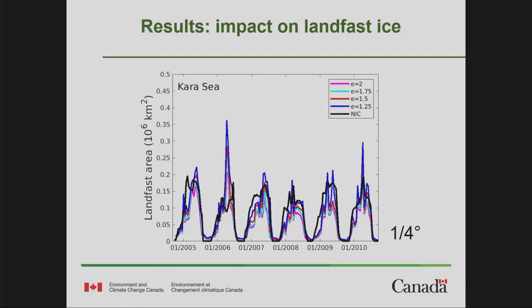Looking at land fast ice — this is consistent with previous studies we've done, though we had not looked at the effect of P* before with optimized drift. If we decrease E, the ellipse aspect ratio, we get more land fast ice. This is the Kara Sea land fast ice area as a function of time; in black is data from the National Ice Center, and we see an improvement in the Kara Sea. We've looked at many different regions and always get an improvement in simulating land fast ice when we decrease E, except in the East Siberian Sea — where grounding is important, so our grounding scheme may need reoptimization or a more sophisticated approach.